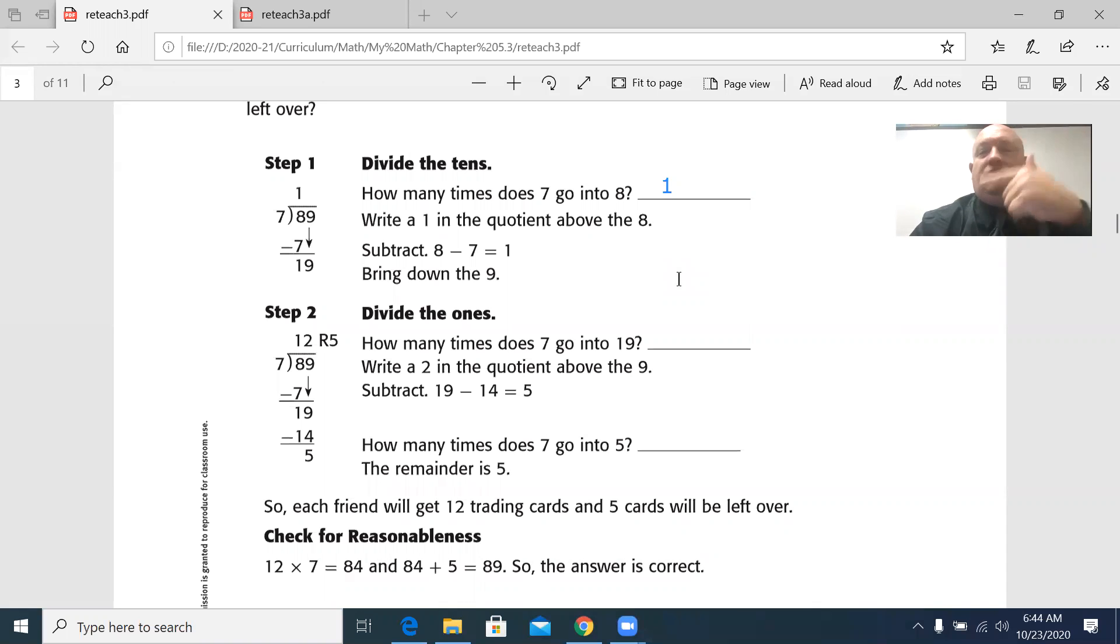It's like the Price is Right. Go over, you lose. So one would go, and they wrote that right up here. Write a one in the quotient above the eight. You want to make sure you keep them lined up. Apologize for the alarm.